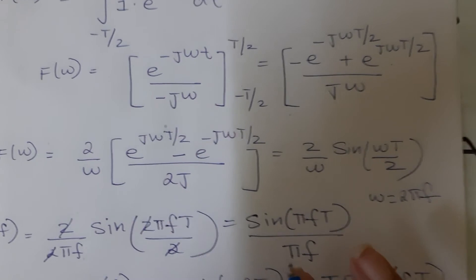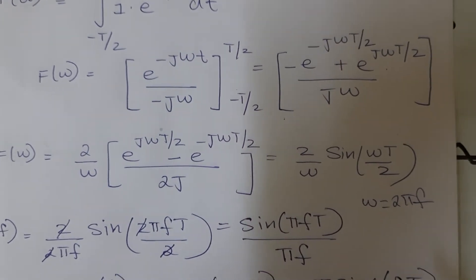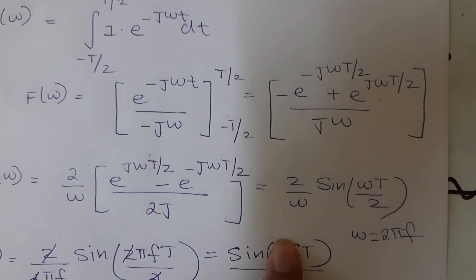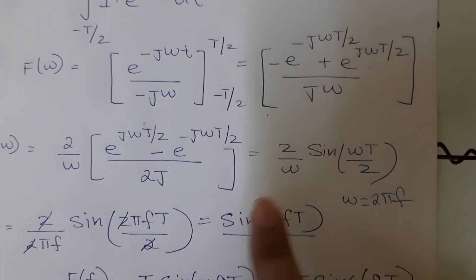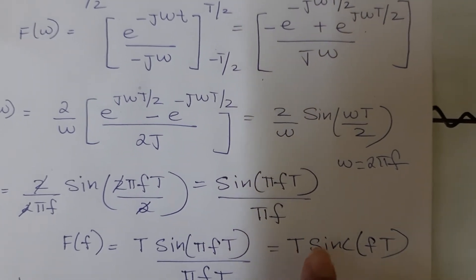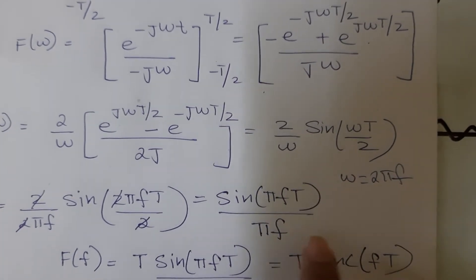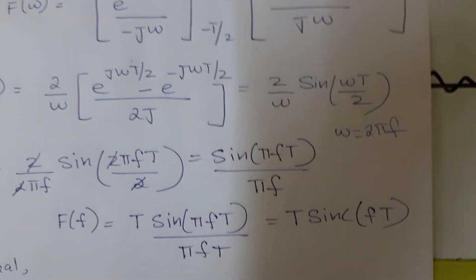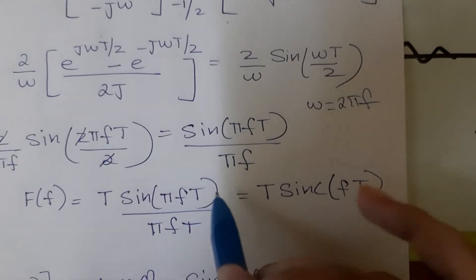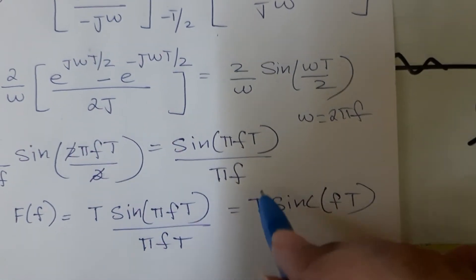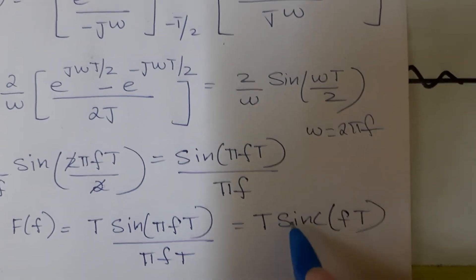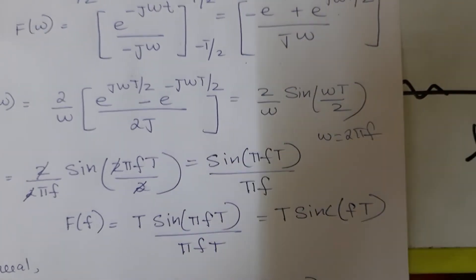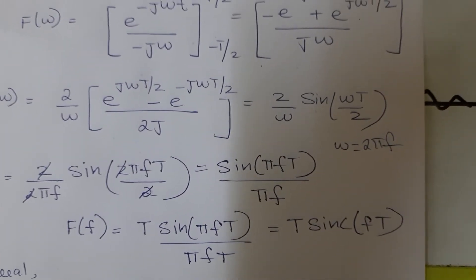Now this looks somewhat like sinc function but it is not sinc function. For sinc function we know whatever is the argument of sine, the same argument should be present in the denominator. What is missing here is tau. So I will multiply and divide by tau. When I do that this becomes my sinc function. So I can write tau sinc of f tau. The Fourier transform of this particular function is tau sinc f tau.